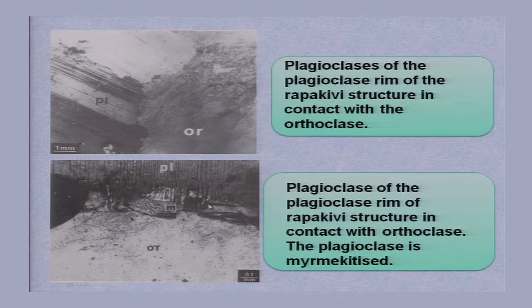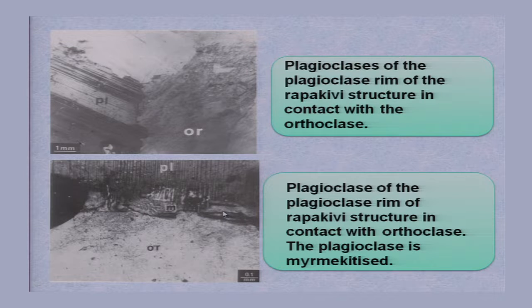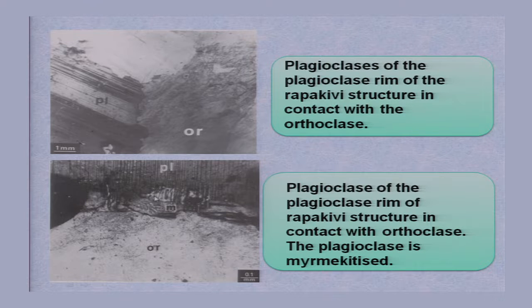Again, here is the plagioclase of the Rapakivi rim in contact with orthoclase. This plagioclase is in contact with orthoclase — see this contact carefully. The contact is showing corrosion rather than a regular contact, and this represents volume-to-volume, molecule-to-molecule, atom-to-atom replacement. The plagioclase is myrmecatized here in the contact zone.